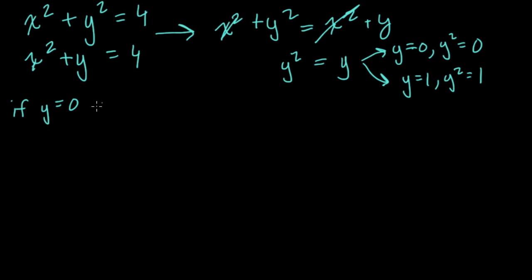x squared plus y equals 4. So x squared now plus 0 equals 4. So x squared equals 4, and x equals the square root of 4, which could equal plus or minus 2.